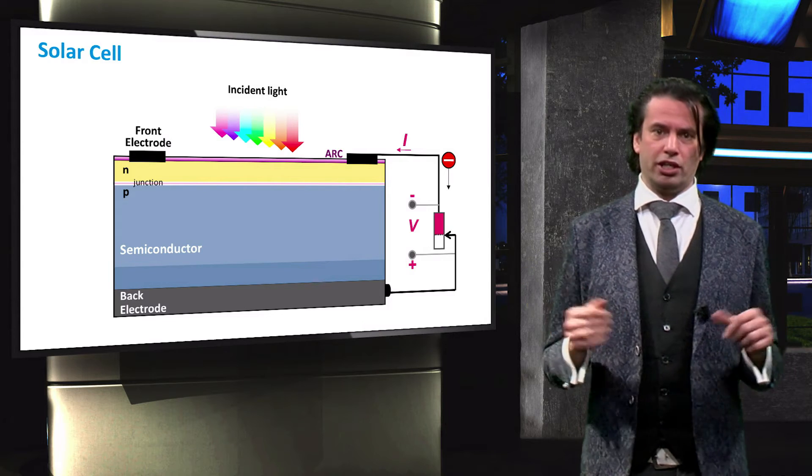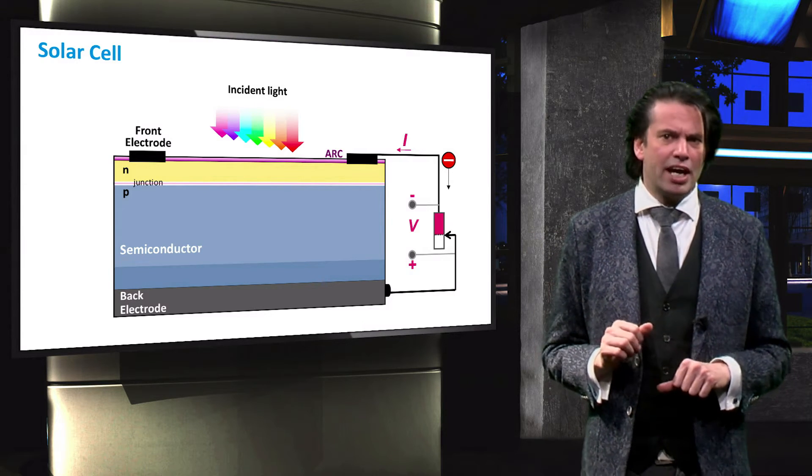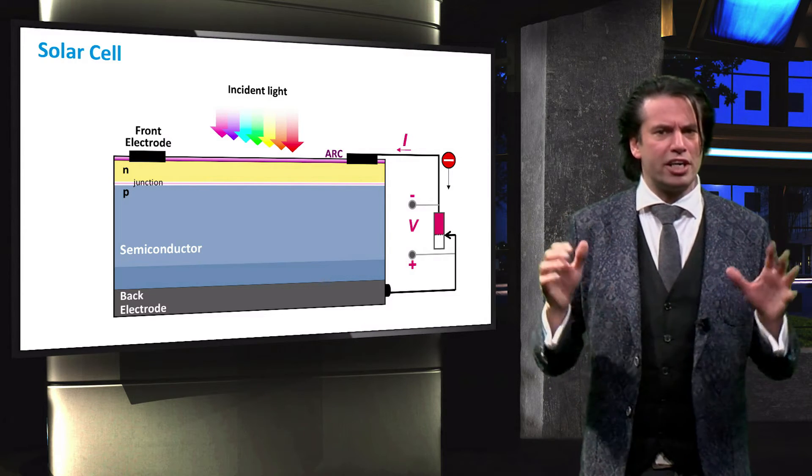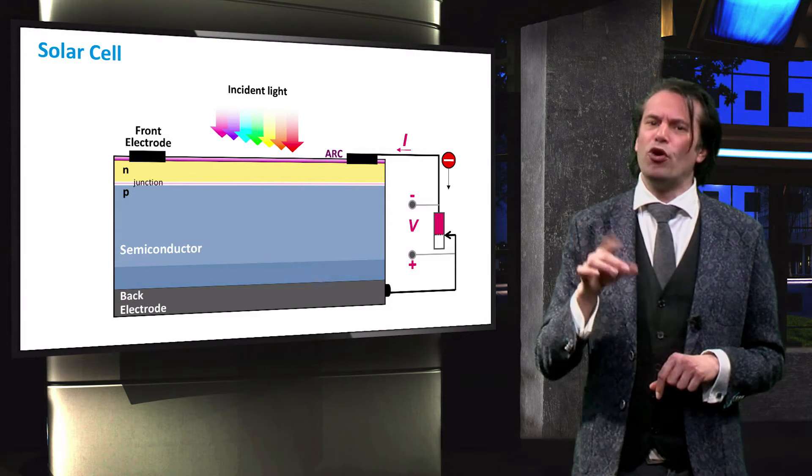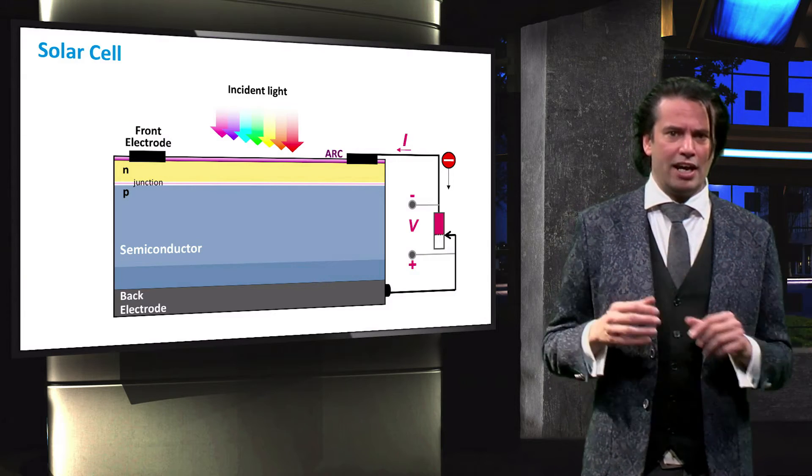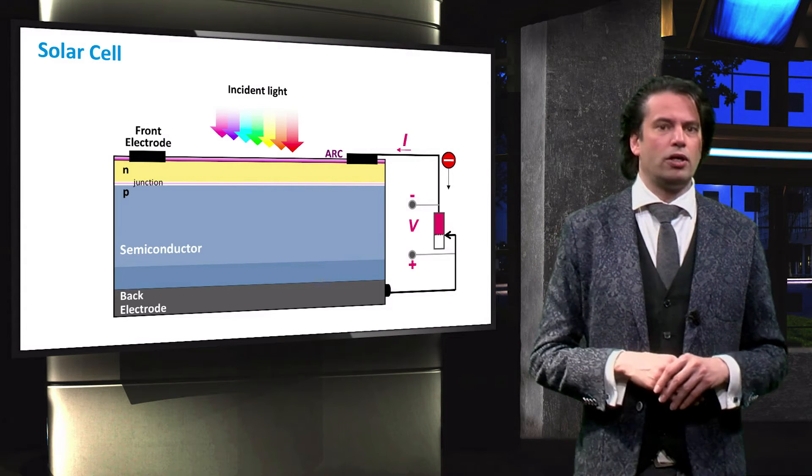Here we see a basic solar cell schematic. There are many different components and layers, and you will become familiar with the properties and purposes of all these layers throughout the course. All you need to know for this video is that a solar cell can take energy from illumination and convert it into electrical energy in an external circuit.